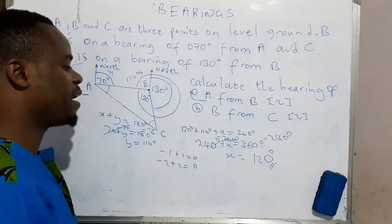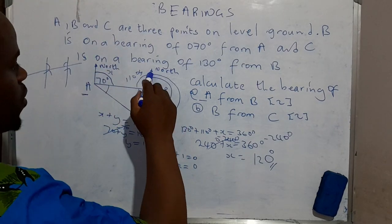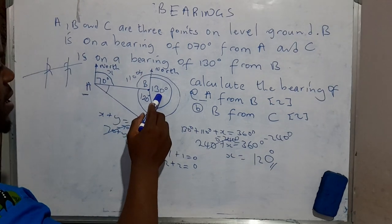And 6 minus 4, that's 2. 3 minus 2, that's 1. So this angle here is actually 120 degrees. But we are not yet done, in that our goal is to determine this angle now from here to there. So we can add 130 plus 120.